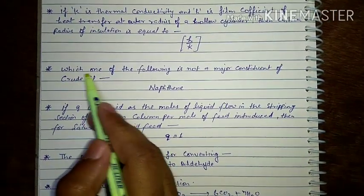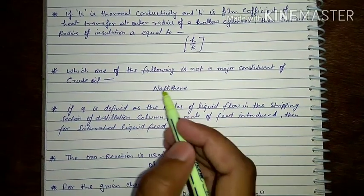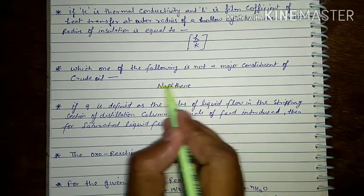Next question: Which one of the following is not a major constituent of crude oil? That is naphthene.